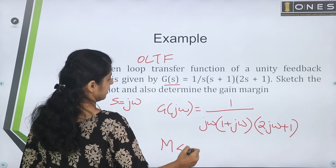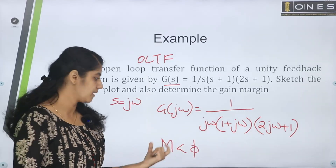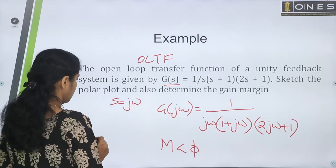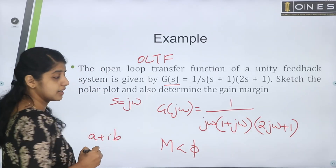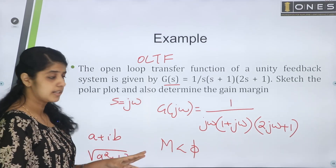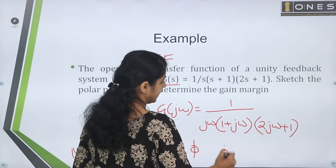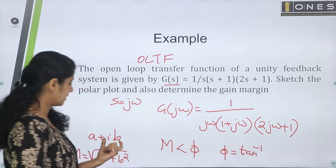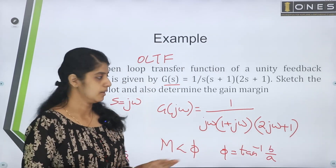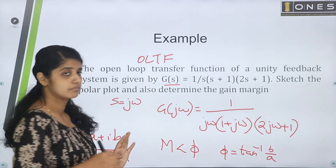Now let's look at the polar formula. The point will be expressed in terms of magnitude and phase angle. Magnitude = √(a² + b²), and phase angle φ = tan⁻¹(imaginary/real) = tan⁻¹(b/a). This gives us the magnitude and phase angle of G(jω).